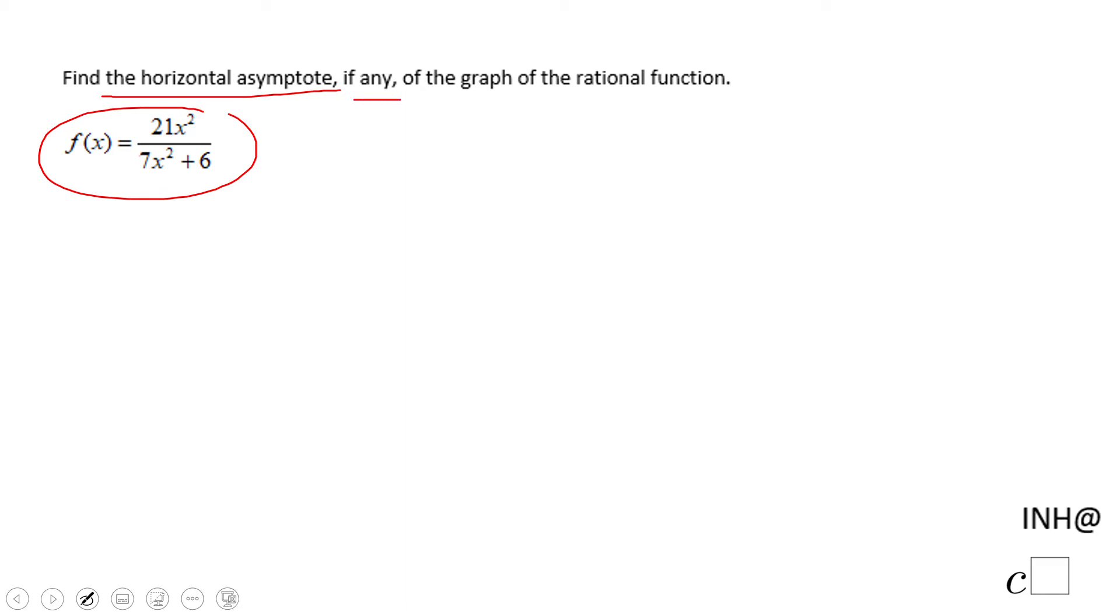And we have three ways to look at horizontal asymptotes. One is an algebraic way. And for that reason, you're going to have to find the degree of the numerator.